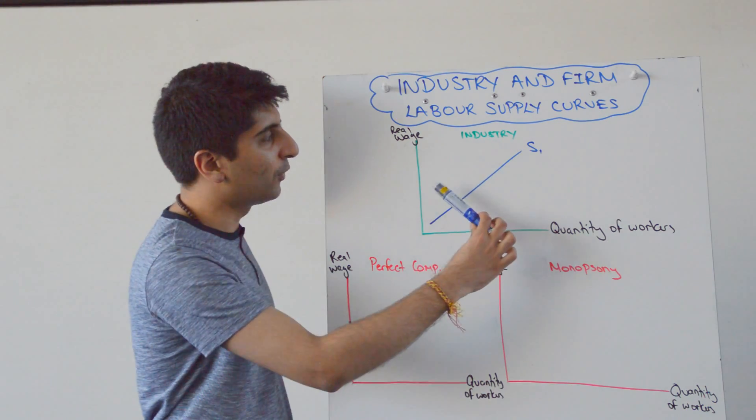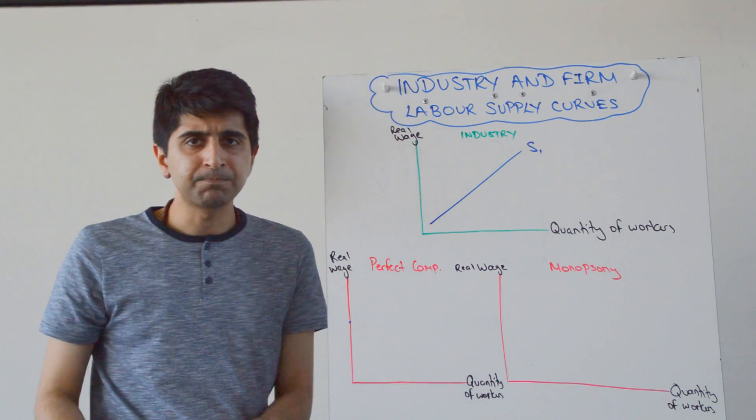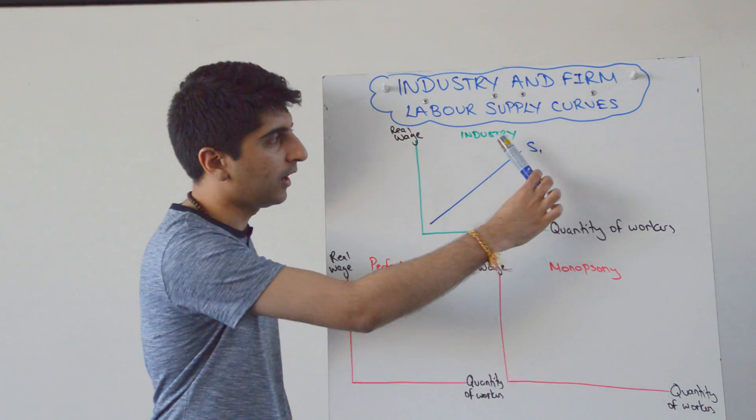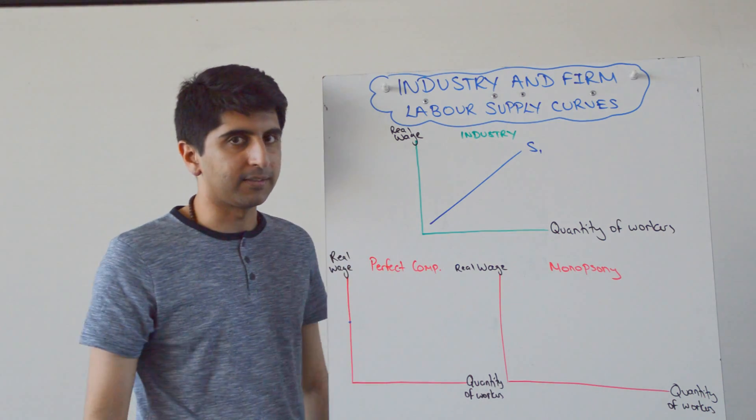So we assume, therefore, that as wages go up, there is a constant increase in the quantity of workers, or in this case the quantity of nurses, hence its upward sloping. That is an assumption, but it's an accepted assumption.